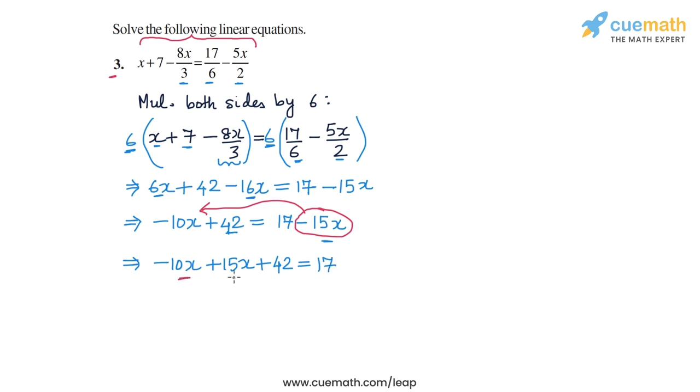Now minus 10x plus 15x is 5x, so we have 5x plus 42 is equal to 17. And now we can take this plus 42 and transpose it to the right side.